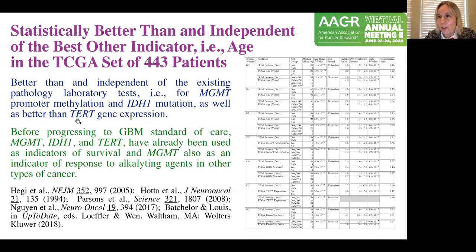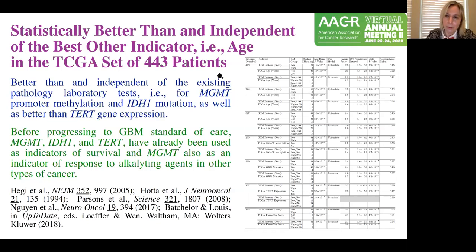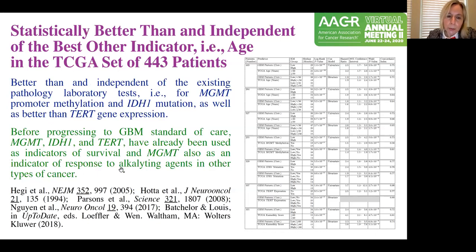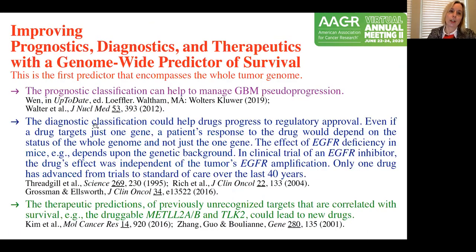We needed to use TCGA because there the patients were assessed in a consistent manner. For our dataset, we didn't have this information very consistently, and for only a small number of the 79 patients. I want to note that all these predictors are not only single-gene predictors, whereas we look at the whole genome — but also they have been predictors in other tumors before they progressed to standard of care in glioblastoma. So we hope to improve the prognostic diagnostics and therapeutics with this genome-wide predictor of survival, the first predictor that encompasses the whole tumor genome.